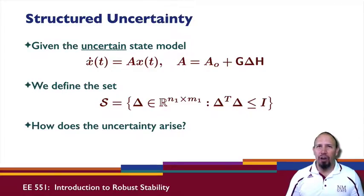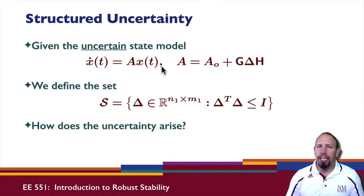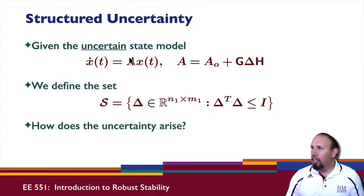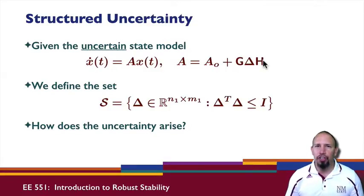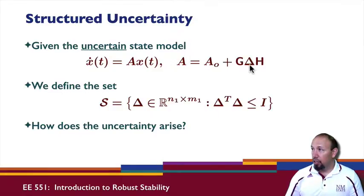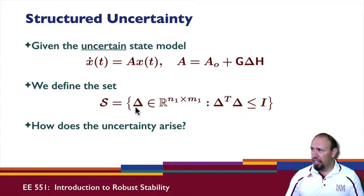We're looking at structured uncertainty now. In the problem of structured uncertainty, we have an uncertain state model. In this case we don't have an input — we're just looking at the stability issue. Our uncertain A matrix is of this form: it's some nominal A matrix and then an uncertainty term, where G and H determine the structure of the uncertainty — that is, where the uncertainty enters into the system. Our delta is our uncertainty, and we can define the set S such that...